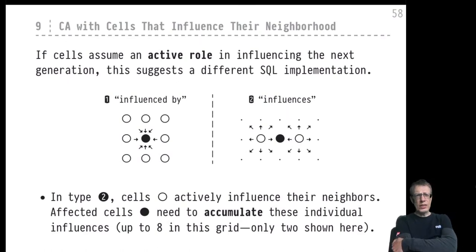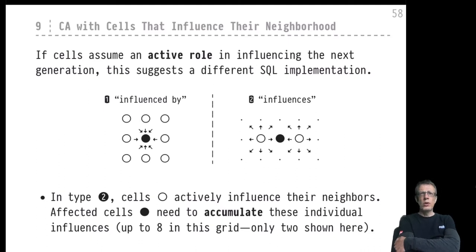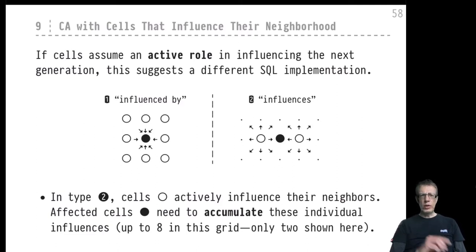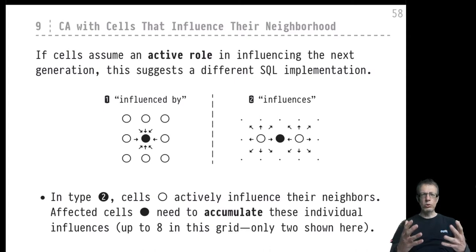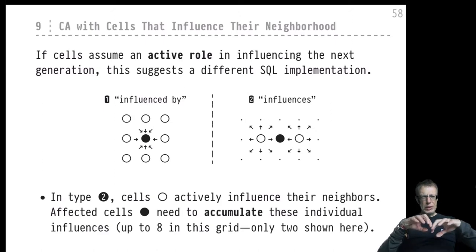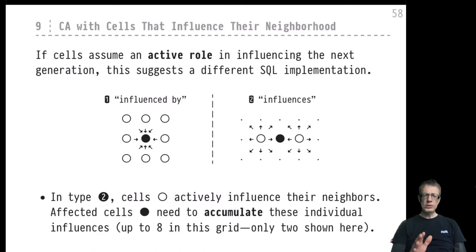Hi again, this is the second video on the use of SQL and recursion to implement cellular automata. This time we will talk about the second kind of automaton in which the neighbors influence the cell C. This will lead to a different type of simulation. As a warning, this video comes with the most complex and largest SQL source code query, so take your time to dig through it - it's a bit more deeply nested than the other queries we've discussed so far.